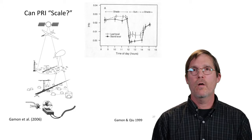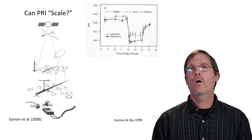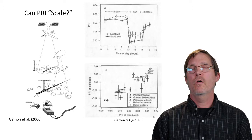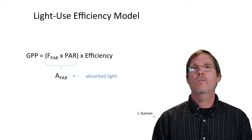This is an experiment looking at simultaneous PRI measurements at the leaf level and the stand level for a stand exposed to shade, then shade removed, then shade replaced — showing the responsiveness of the signal at two scales. Looking at many different plants, as long as the canopy is closed, you see a coherent signal at stand scale. So there is hope that we can use this for remote sensing.